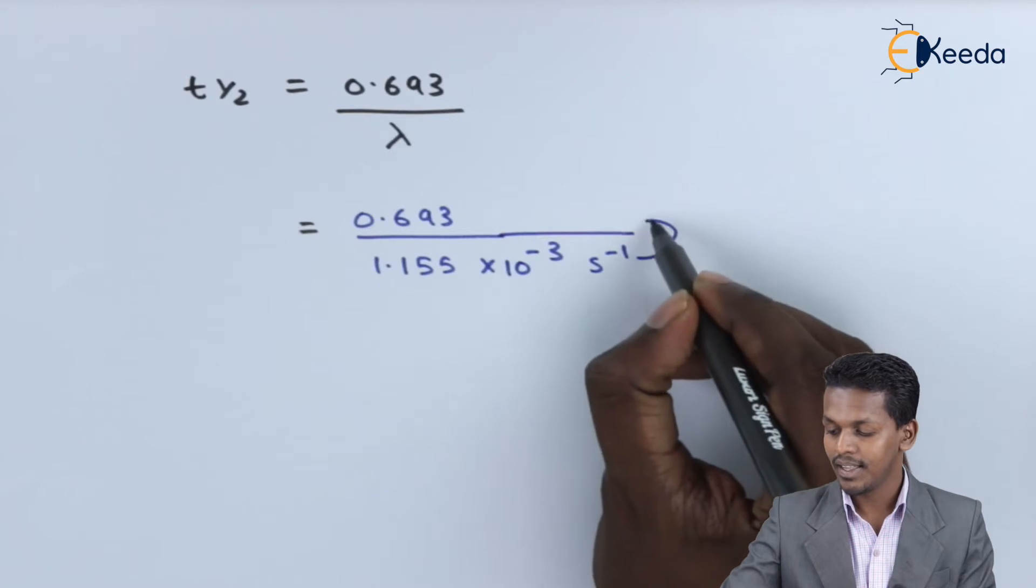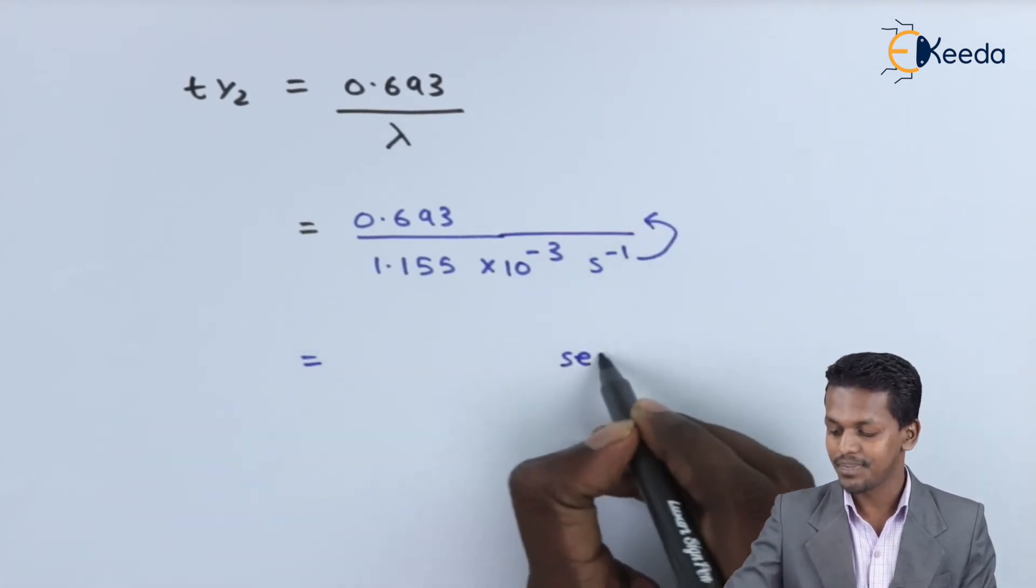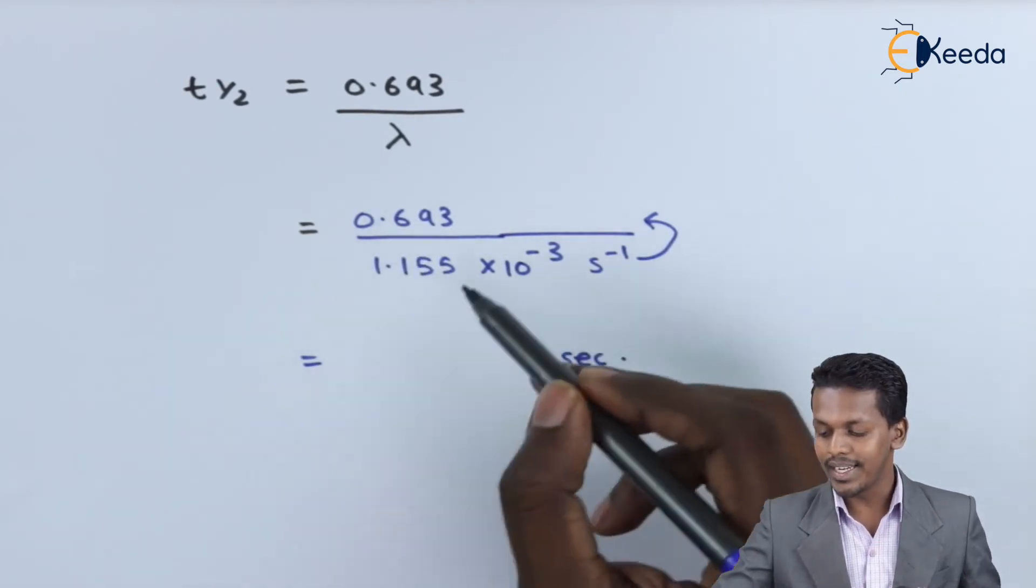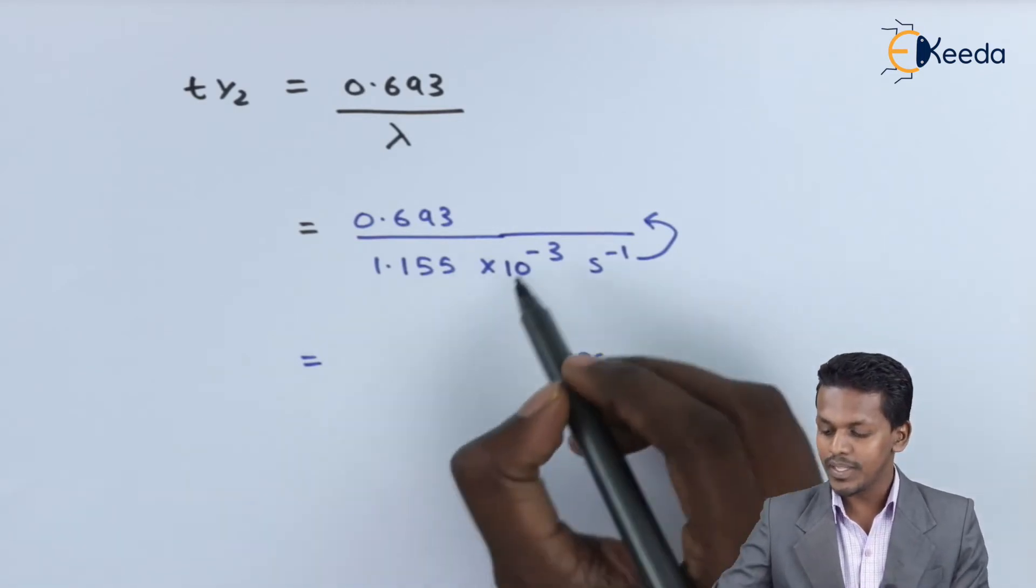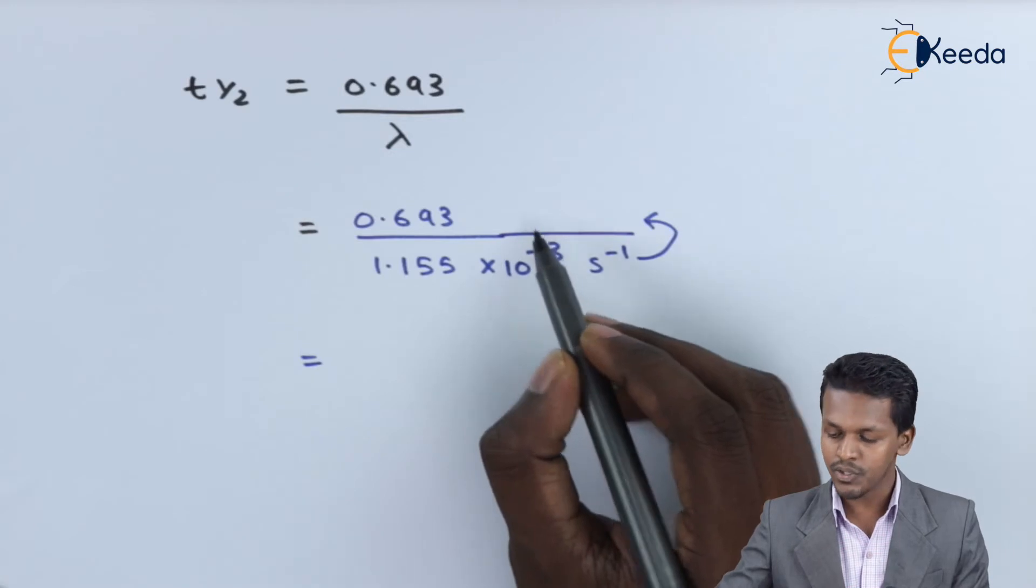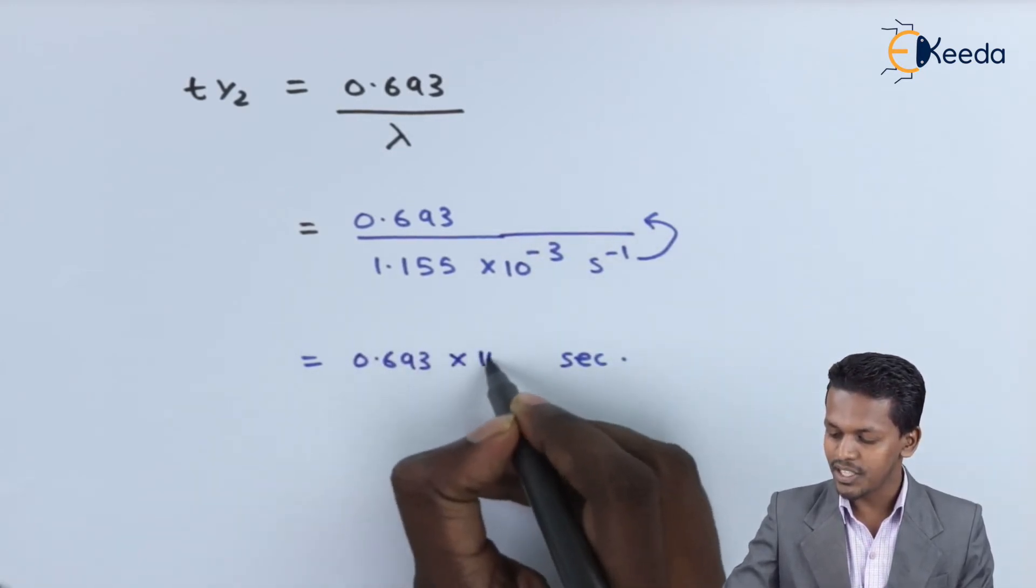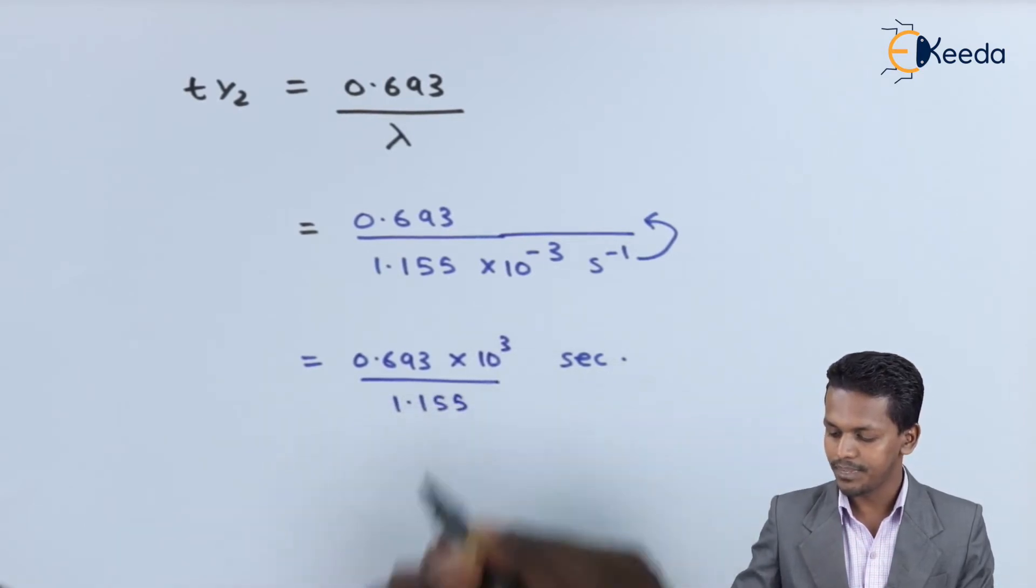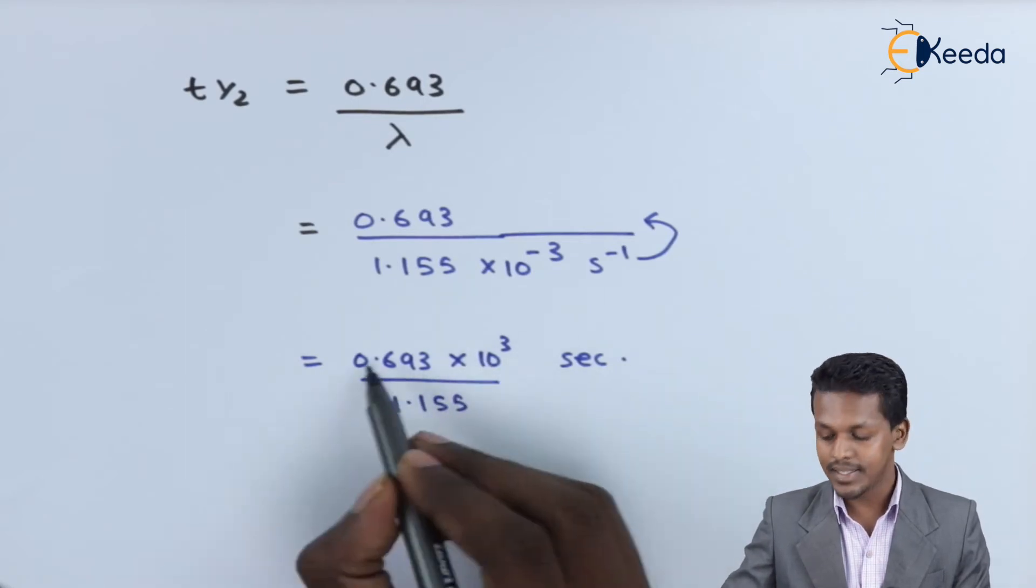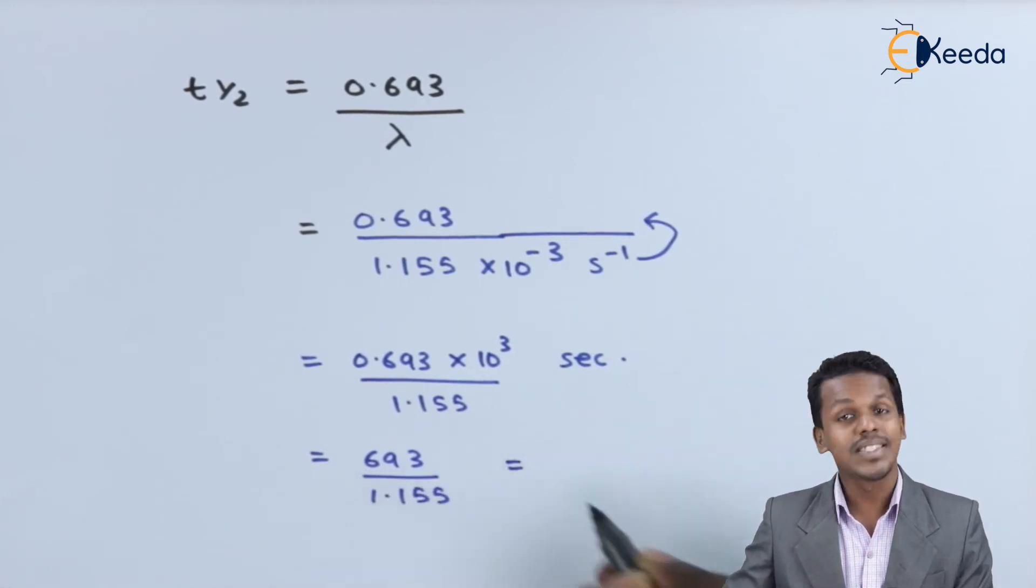Obviously we could get the value of t_half in seconds. Let us see how we can calculate it. We can shift 10^-3 to the numerator, so we get 0.693 × 10^3 divided by 1.155. If we multiply this, we get 693 divided by 1.155. Let's see what answer we get.